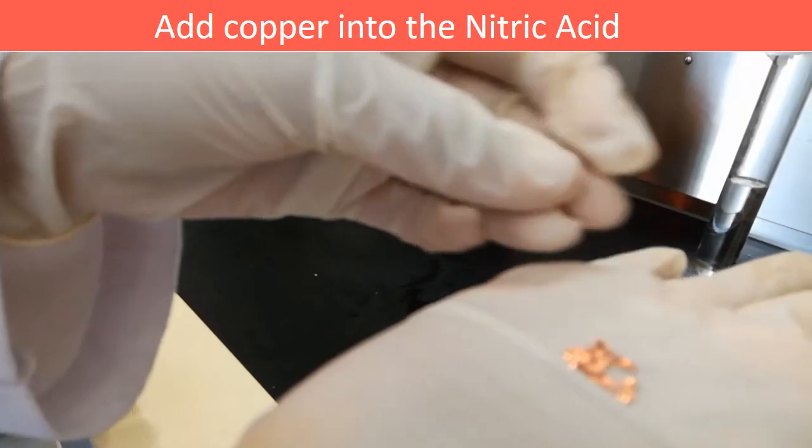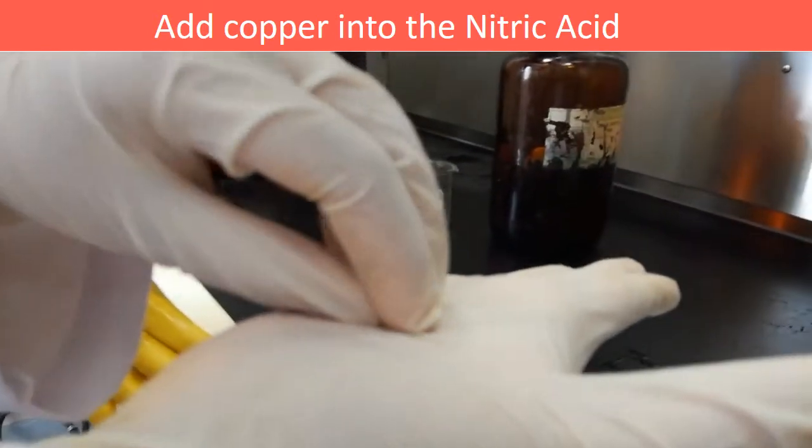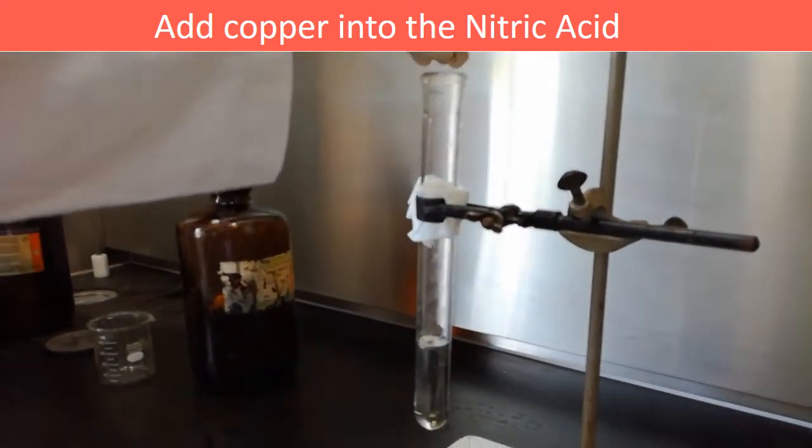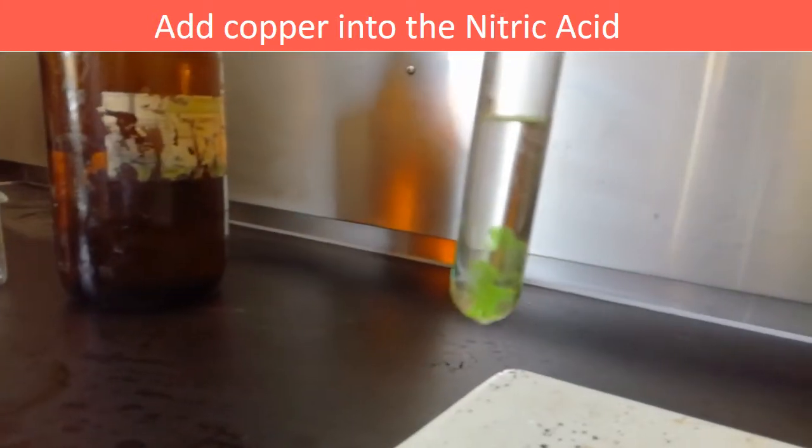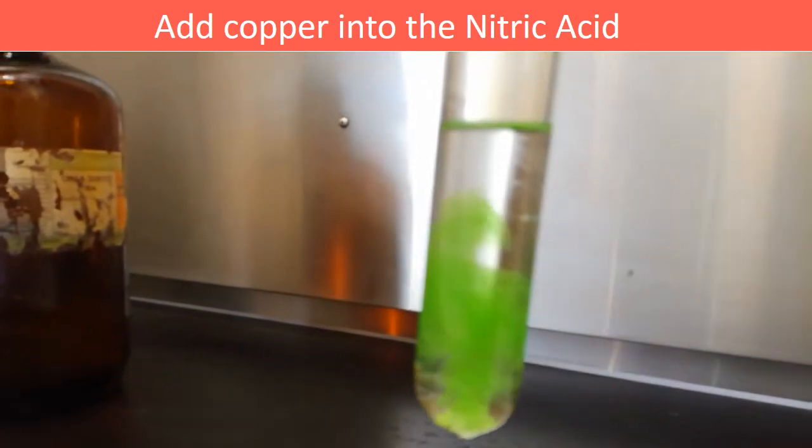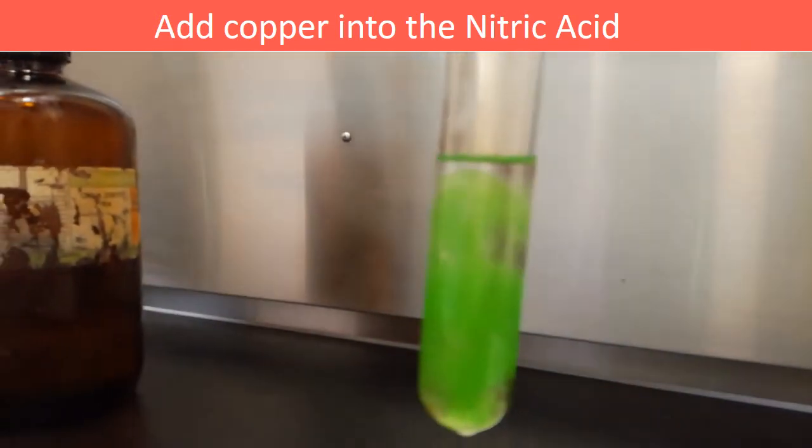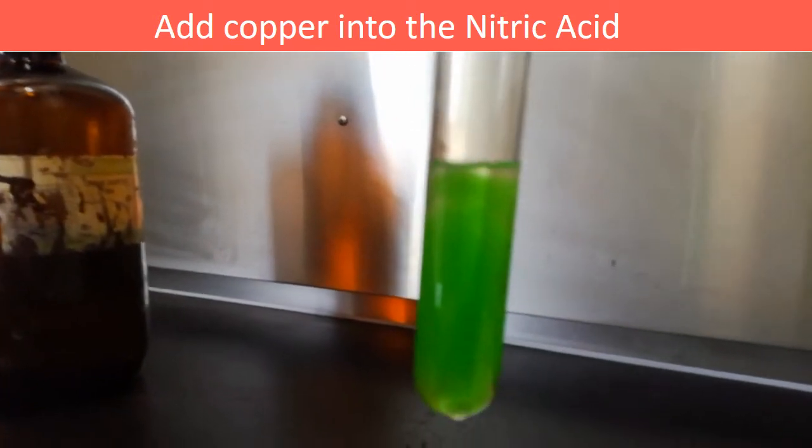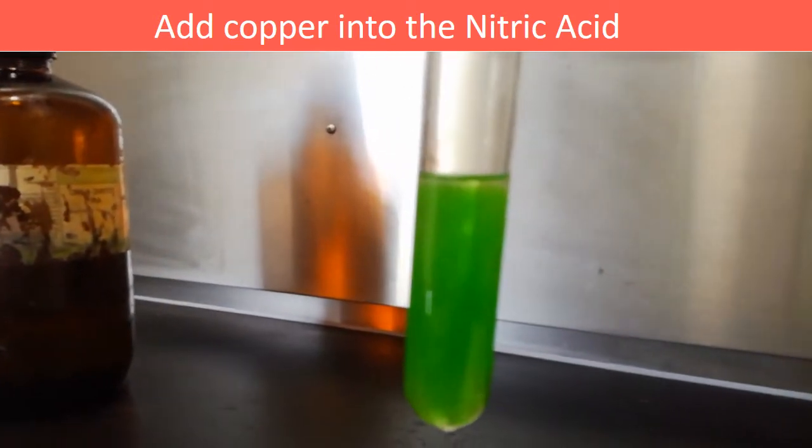From this reaction, brown color nitrogen dioxide gas is produced. Here we add some copper pieces into the nitric acid formed. We get to know whether the reaction is taking place when we add copper pieces into the test tube. The nitric acid is changed into green color.